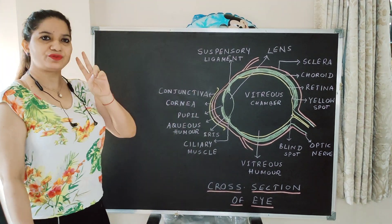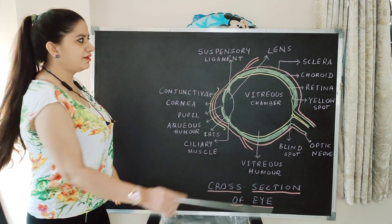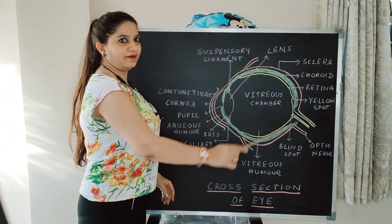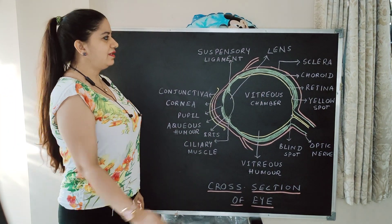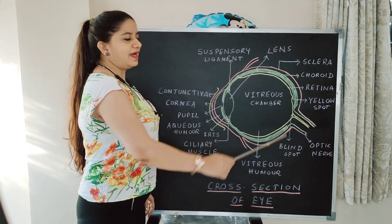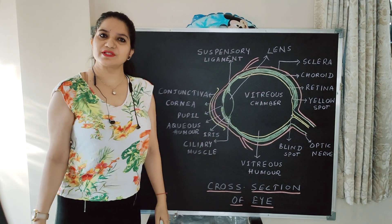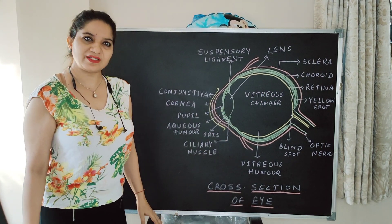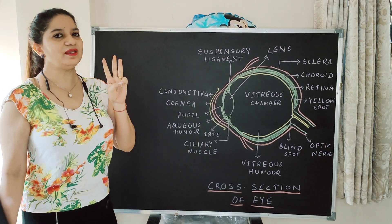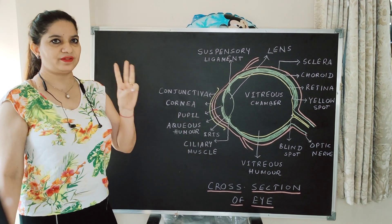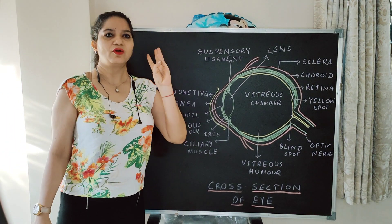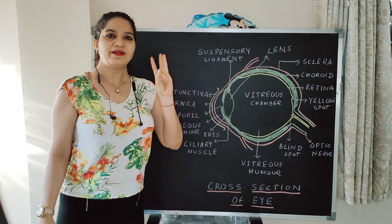The eye has got three layers. The outer layer is the sclerotic layer, also known as sclera. The middle layer is choroid and the innermost layer is retina. So there are three concentric layers of the eye: sclera, choroid, and retina.